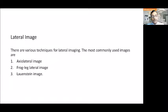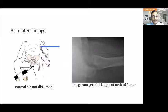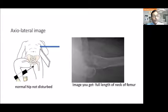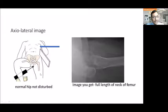There are three described lateral views. The first is the axial lateral image, the second is the frog leg lateral image, and the third is the Lowenstein image. The axial lateral image has one great advantage: the affected hip remains in the same position and is not disturbed at all.